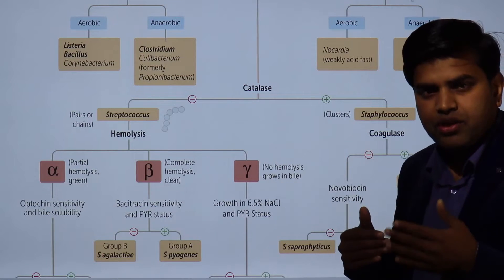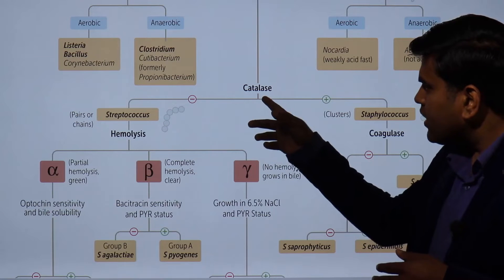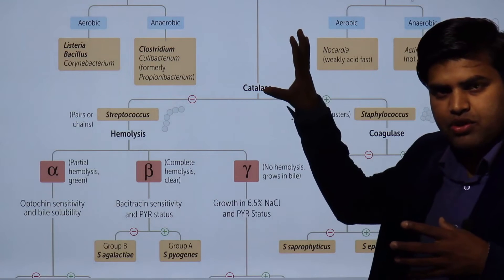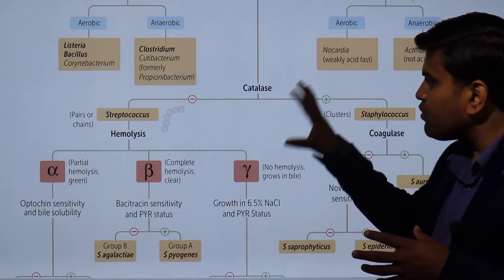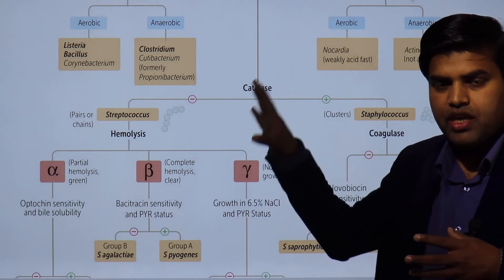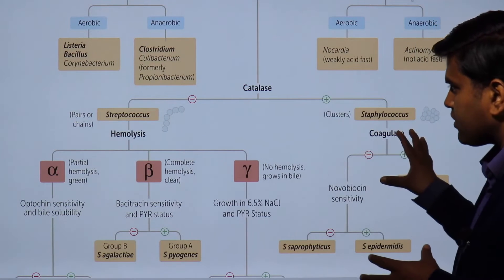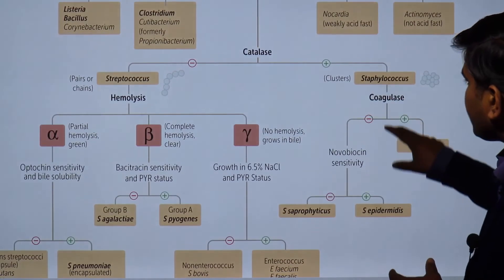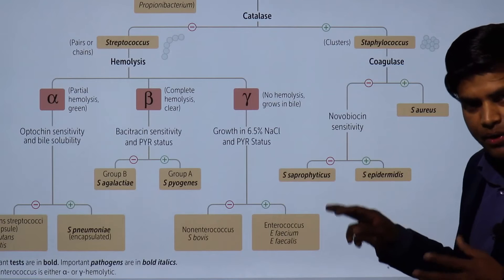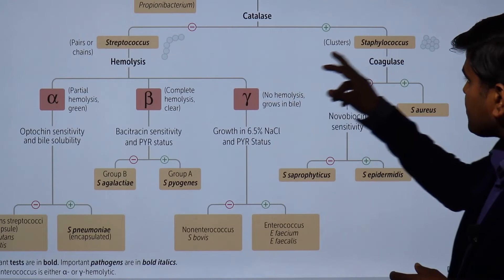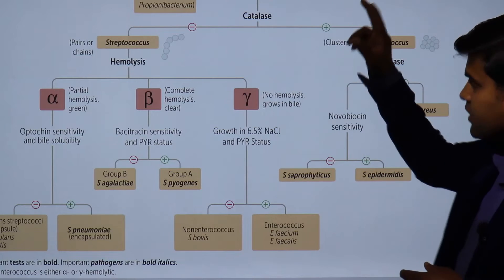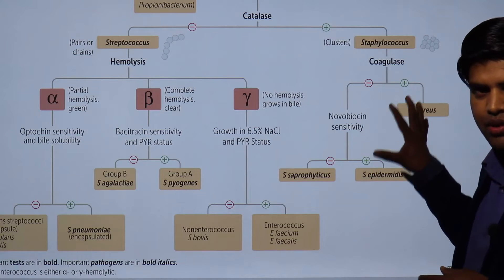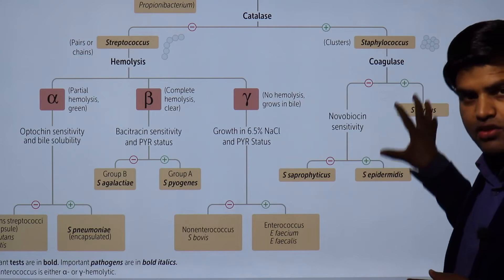Gram positive cocci are divided by the catalase test into two groups: catalase positive organisms go to the Staphylococcus group, which are cluster-forming organisms, and catalase negative organisms go to the Streptococcus group. So the catalase test breaks down gram positive cocci into Staphylococcus and Streptococcus.